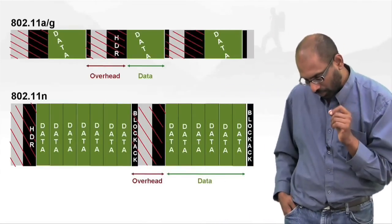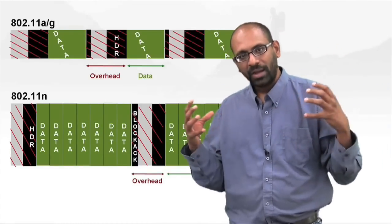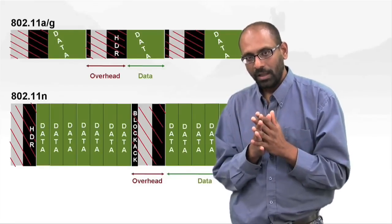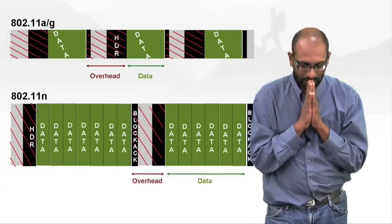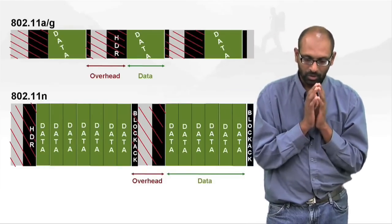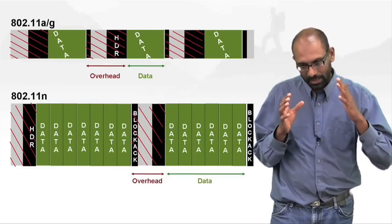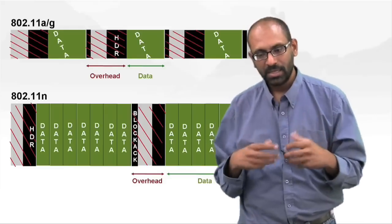The second key thing that 802.11n does is it allows for aggregation of frames. Now recall from all our earlier discussions, I have been saying all along, almost in every video, that 802.11n inherently is a hub-based protocol.